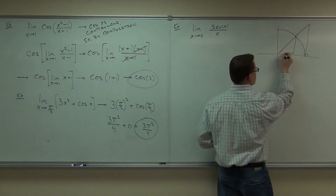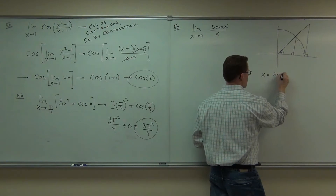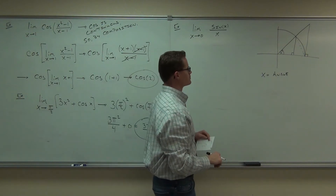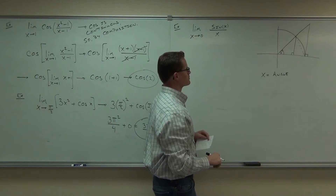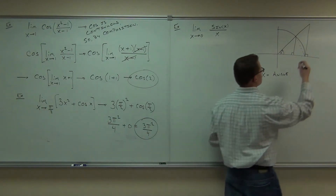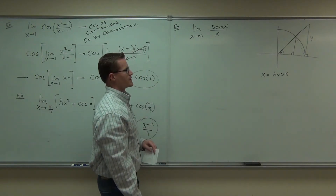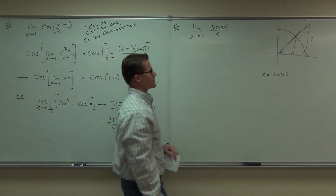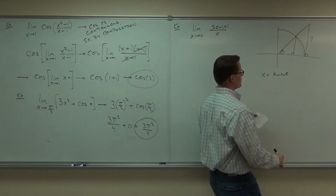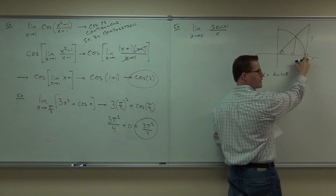Let me define a couple of things. We're going to call X our angle. We're going to call this tan X. How far is this distance right here — from here to here? The answer is Y. This is going to be our tan X.